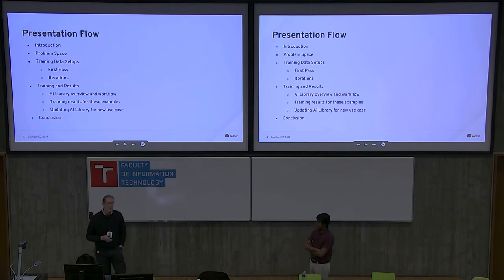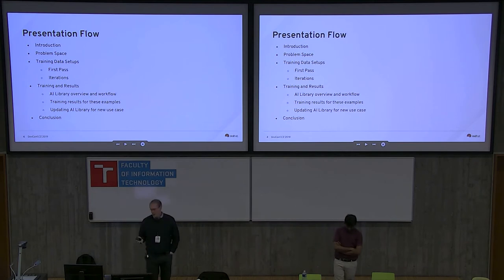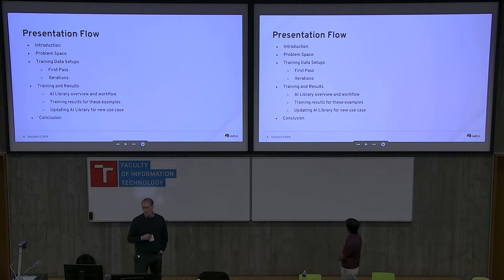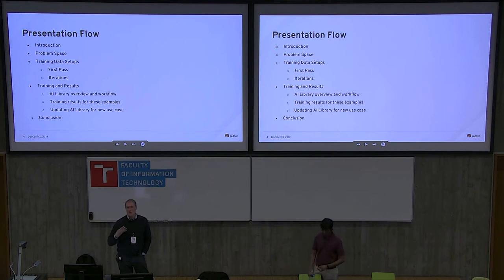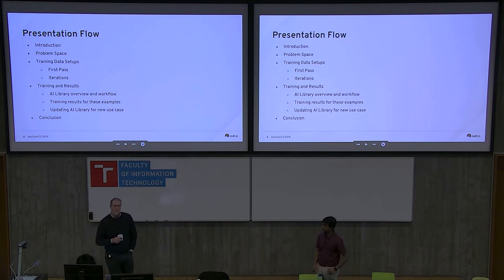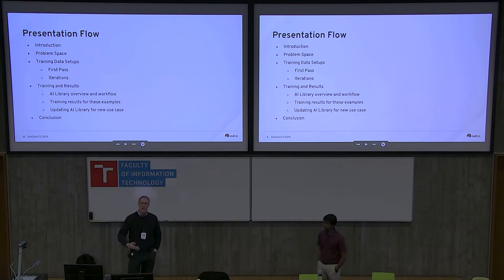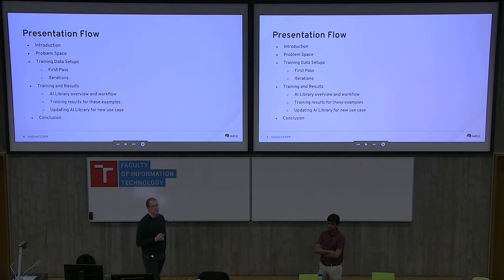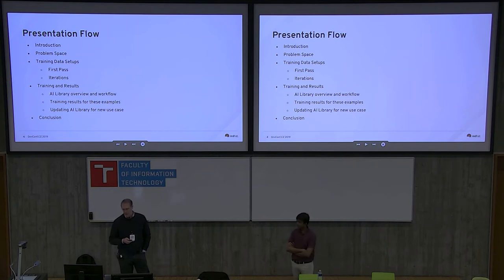What we'll do today is I'll talk a little bit about the problem space we have — you may see that it resembles a problem space that you know. Then we'll go through preparing the training data for the machine learning process. I'll go through the first pass in a fair amount of detail and it won't be super technical. Then if we have time, we'll talk about iterations — what do you want to consider doing next? Then Prasanth is going to talk about the actual training using the libraries that do model development, how you measure to know when you're done, and how that fits into the AI library strategy.